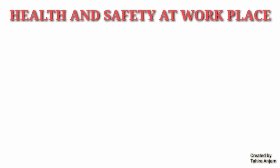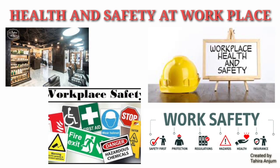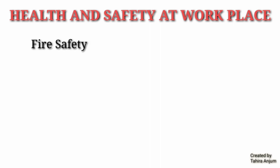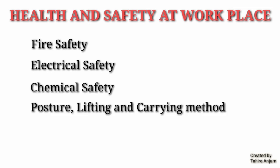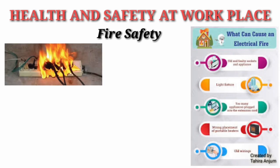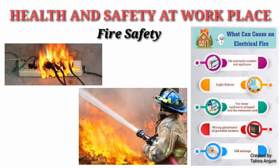Next topic: health and safety at the workplace. We should think about health and safety in our salon - the tools and equipment we use. What do we need to keep in mind for safety? The key areas are: fire safety, electrical safety, chemical safety, posture lifting and carrying, and parlor hygiene. Starting with fire safety: the salon has many potentially dangerous equipment, so basic knowledge of fire safety is very necessary.